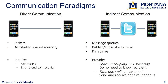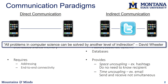The broker provides space uncoupling and time uncoupling. Space uncoupling means the sender doesn't necessarily need to know the full identity of the receiver — maybe we're sending messages to a group ID or a topic to which many different people subscribe. Time uncoupling means the sender and receiver can complete their communication at different times; I can send a message now and then later someone comes online and receives it.